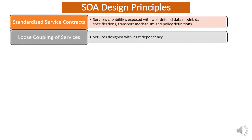The next design principle of SOA is loose coupling of services. This design principle states that we should implement our services in such a way that they have the least dependency, or ideally no dependency, between the services. This loose coupling makes service-oriented architecture ideal for benefiting from other SOA design principles which we will be discussing later in this video.